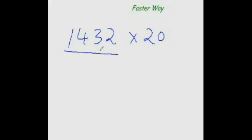Multiplying with 20 is that you double up all the digits and you add 0 after that. So 2 times 1 is 2, 2 times 4 is 8, 2 times 3 is 6, 2 times 2 is 4, and you add 0 after that. That's your answer, 28640.